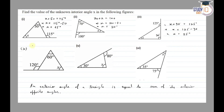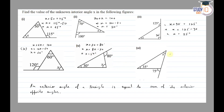In the fourth figure: x plus 60 is equal to 120, so x is equal to 120 minus 60, giving x equal to 60 degrees. In the fifth figure: x plus 30 is equal to 80 degrees, since the exterior angle equals the sum of interior opposite angles. So x is equal to 80 minus 30, giving x equal to 50 degrees.